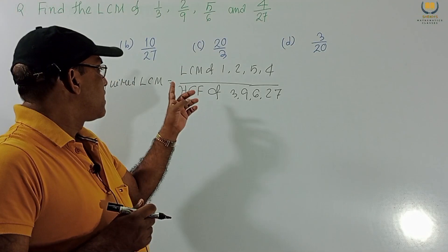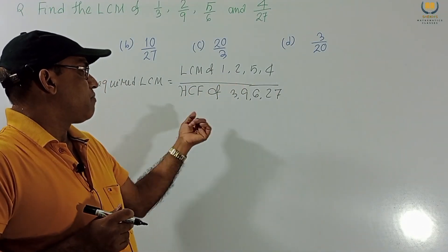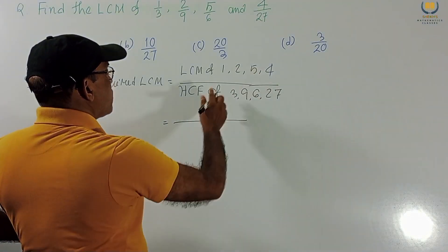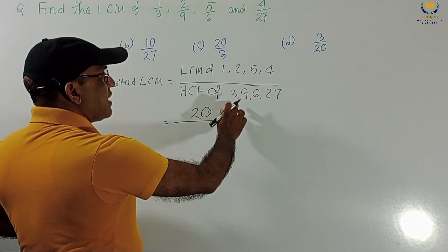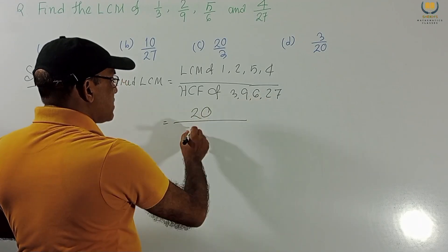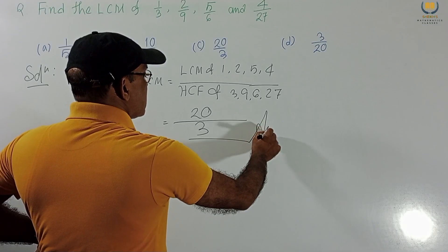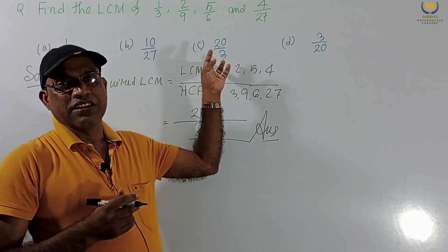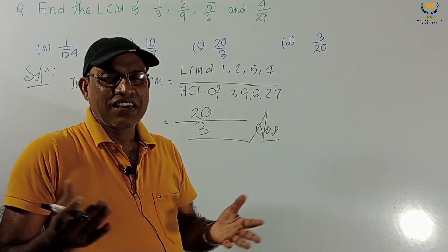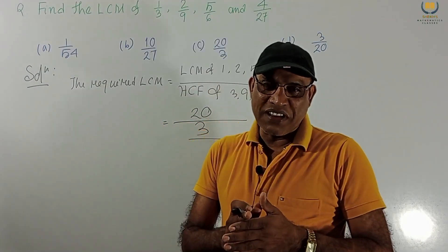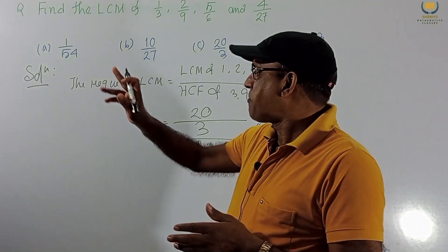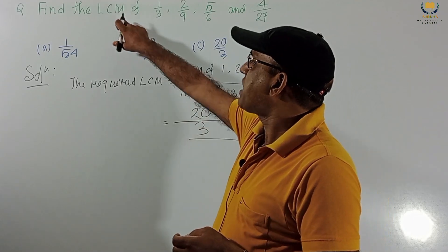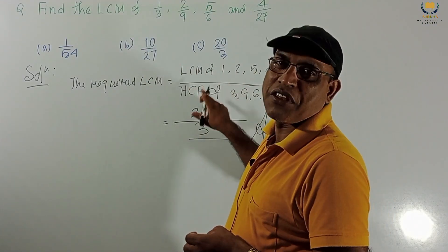LCM of numerators 1, 2, 5, 4 is 20. HCF of denominators 3, 9, 6, 27 — 3 is the common factor, so HCF is 3. Therefore our answer is 20/3, which is option C. Remember: for LCM of fractions, write LCM of numerators over HCF of denominators. For HCF of fractions, write HCF of numerators over LCM of denominators.